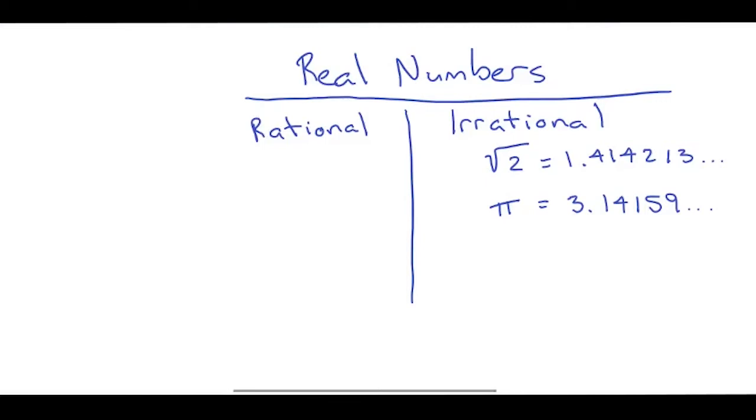Rational numbers would be like three-fourths. If I wrote three-fourths as a decimal, it's 0.75, or one-third. If that were a decimal, it would be 0.33333 and so on and so forth.